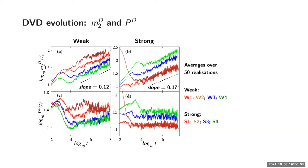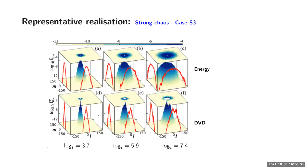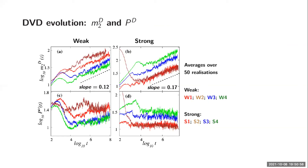Looking at the second moment and participation number for the deviation vectors across more realizations: for both weak and strong chaos cases, the second moment grows slowly but is still growing, while the participation number is practically constant. This emphasizes what we saw previously — the deviation vector has a pointy shape, its width is not growing much, but the dynamics of its center keeps moving around.